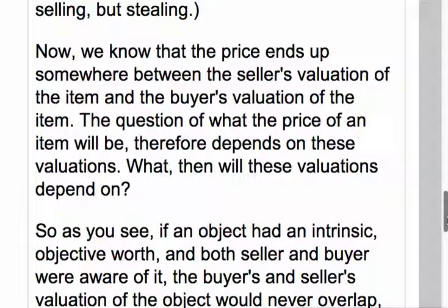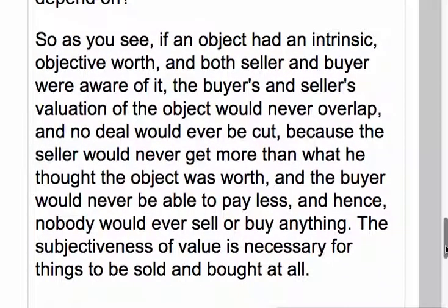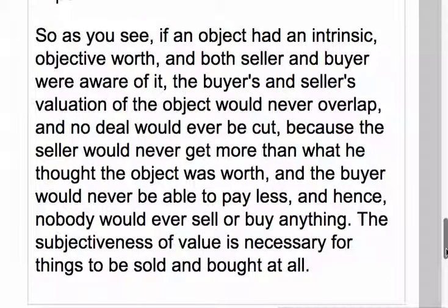If an object had an intrinsic, objective worth and both seller and buyer were aware of it, the buyer's and seller's valuations would never overlap and no deal would ever be made — because the seller would never get more than what he thought the object was worth, and the buyer would never be able to pay less. Hence, nobody would ever sell or buy anything. The subjectiveness of value is necessary for things to be sold and bought at all.